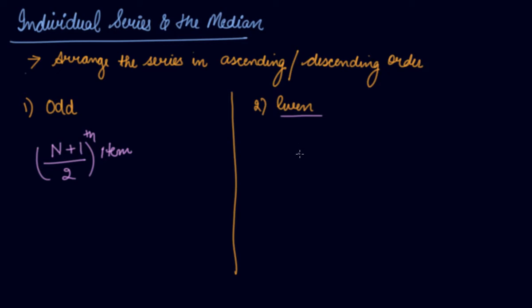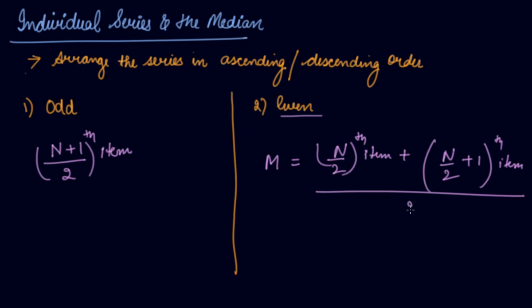In that case what you do? You calculate the median M using the n by 2th item plus n divided by 2 plus 1 item divided by 2. So in this case let's suppose you are given 8 items. So first you will find out n by 2 which means 8 by 2 is 4th. So you will find out the 4th item in the series.